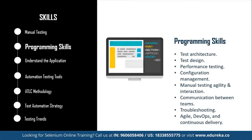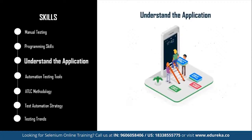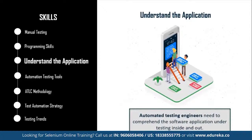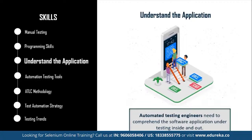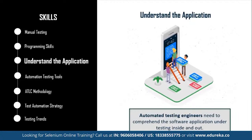Next up is understanding the application. The common application details that every automation tester needs to take care of include which programming languages were used in developing the application, what platform the application is built on, which databases are involved, whether there are any web services or APIs connected to different parts of the system, and many more such questions. These points may vary based on the complexity of the application, so make sure you are completely thorough with the application you are going to test.